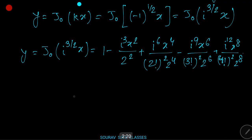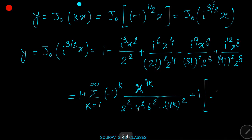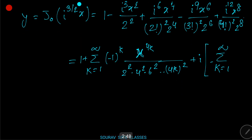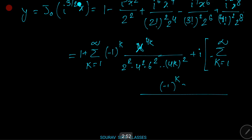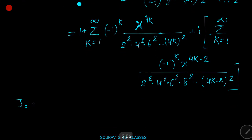Therefore that equals 1 + summation k=1 to ∞ of [(-1)^k · x^(4k)] / [2² · 4² · 6² · ... · (4k)²] + i · summation k=1 to ∞ of [(-1)^k · x^(4k-2)] / [2² · 4² · 6² · ... · (4k-2)²]. So ber(x) and bei(x) are defined accordingly.